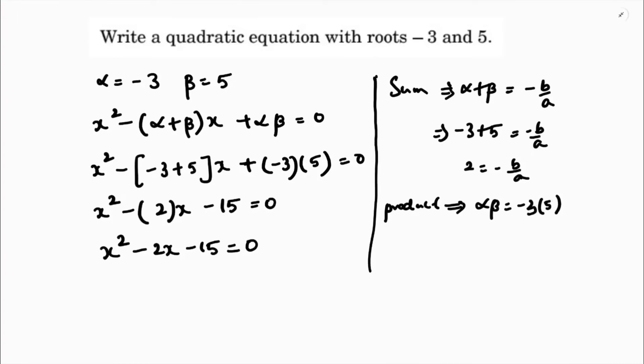Now if you compare, see we have a as 1. A value is 1. 2 equals minus b, so b is minus 2. And c equals minus 15. The standard equation is ax square plus bx plus c.